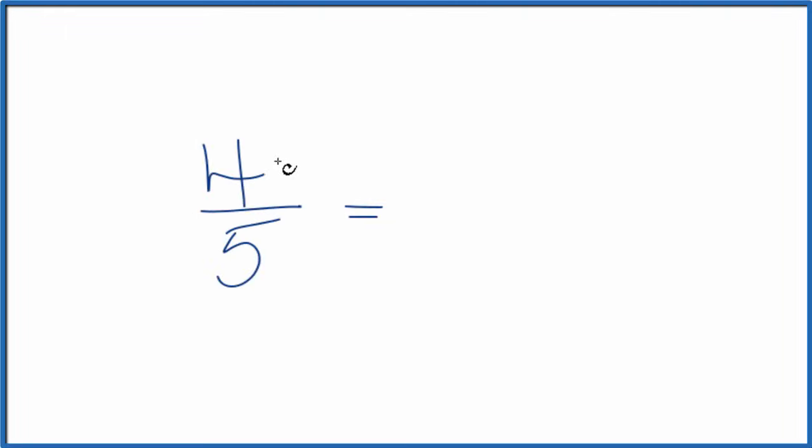If you're asked to find equivalent fractions for four-fifths, here's how you do it. First off, when we look at four-fifths, four over five, we want an equivalent fraction to have the same value but a different numerator over a different denominator.